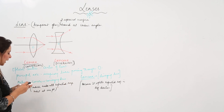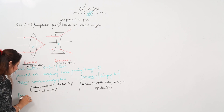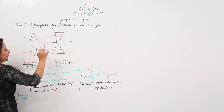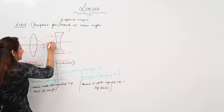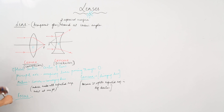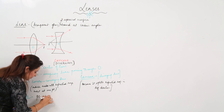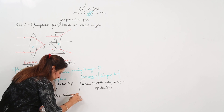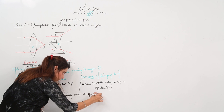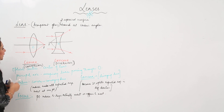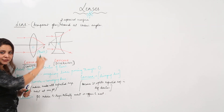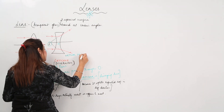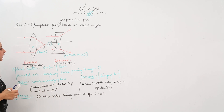Another term is focus. Focus is a point where refracted rays actually meet or appear to meet. In the case of the convex lens, rays are actually meeting, so it has a real focus. In the case of the concave lens, rays appear to meet when produced behind, so it has a virtual focus.